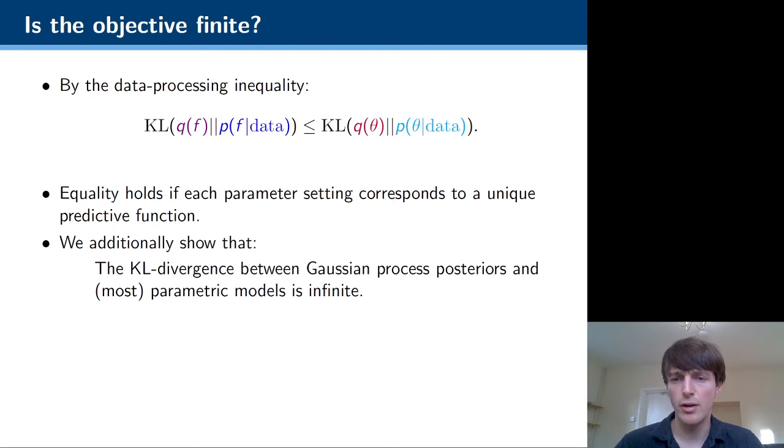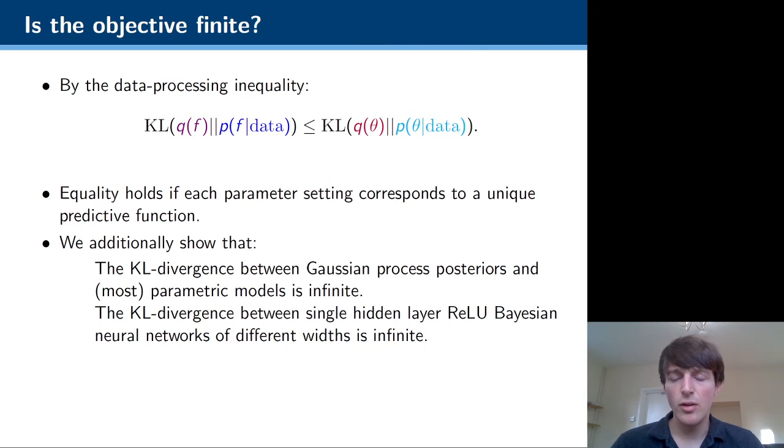We also have some negative results, though. And basically, if one of your distributions, so either your prior or approximate posterior is a non-degenerate Gaussian process, and the other is a nice parametric model, then the KL divergence is always going to be infinite. So here you don't really have a well-defined objective function to minimize.